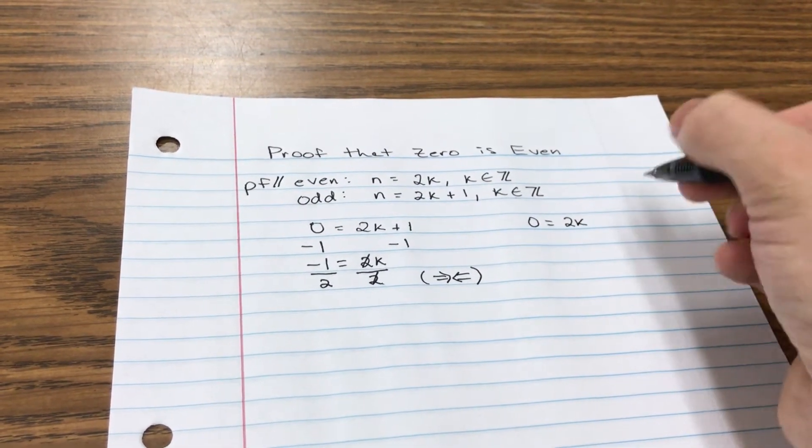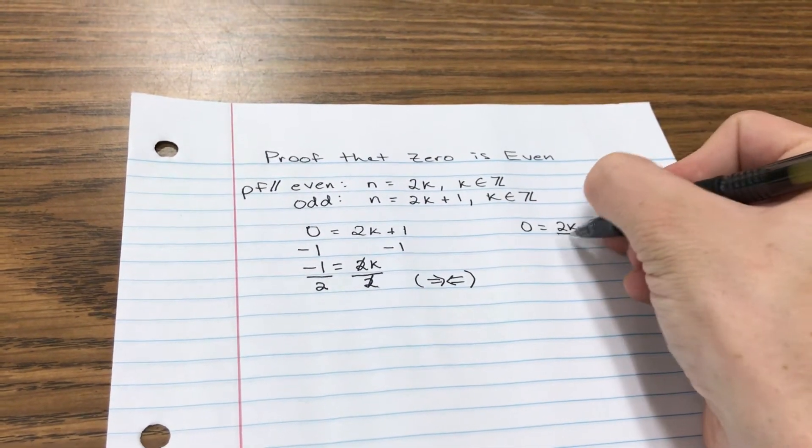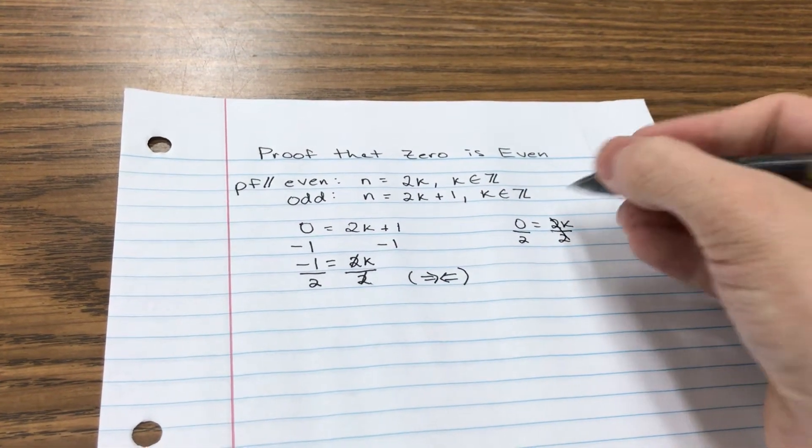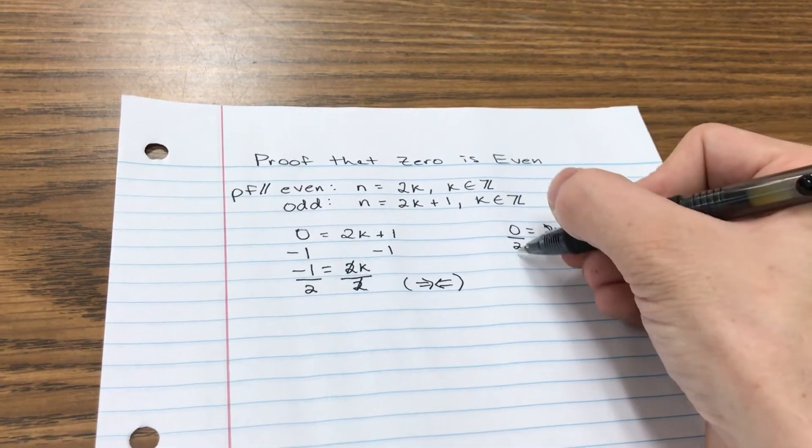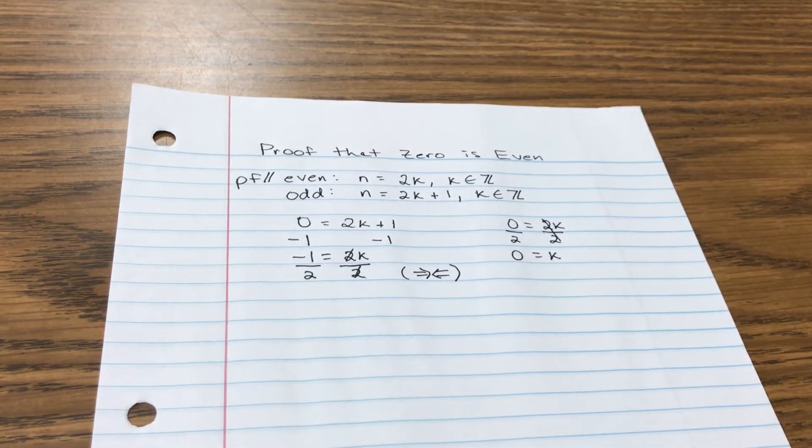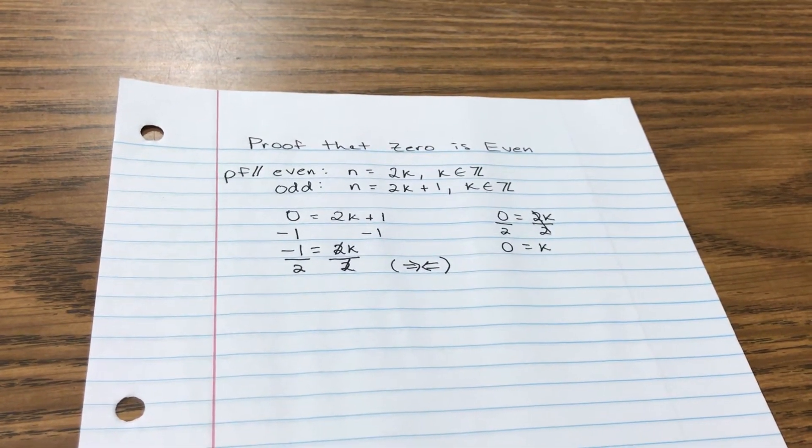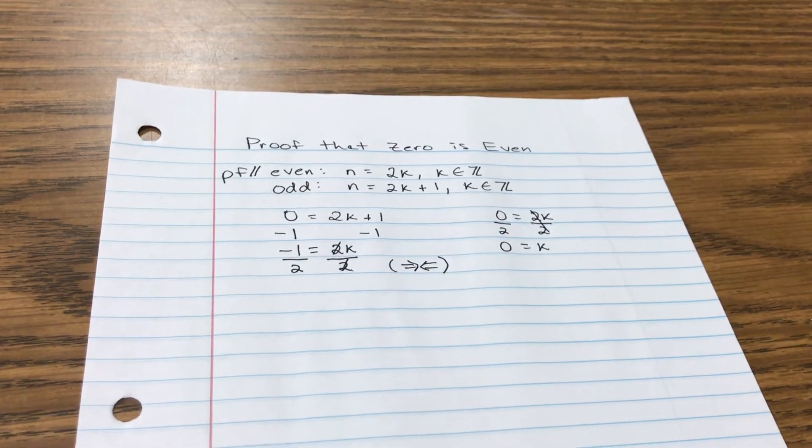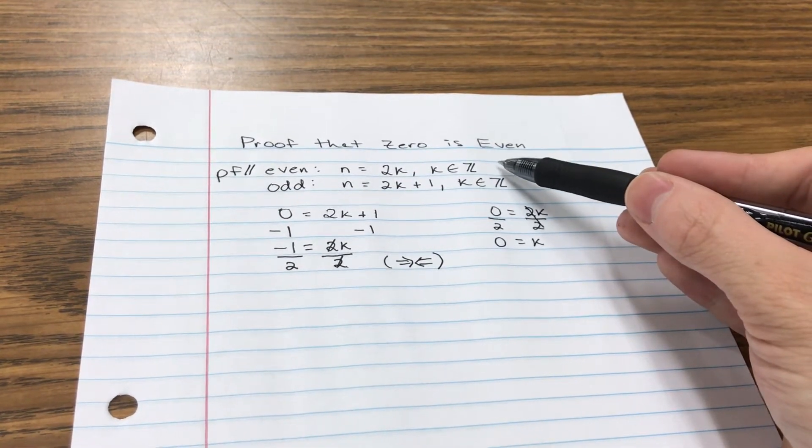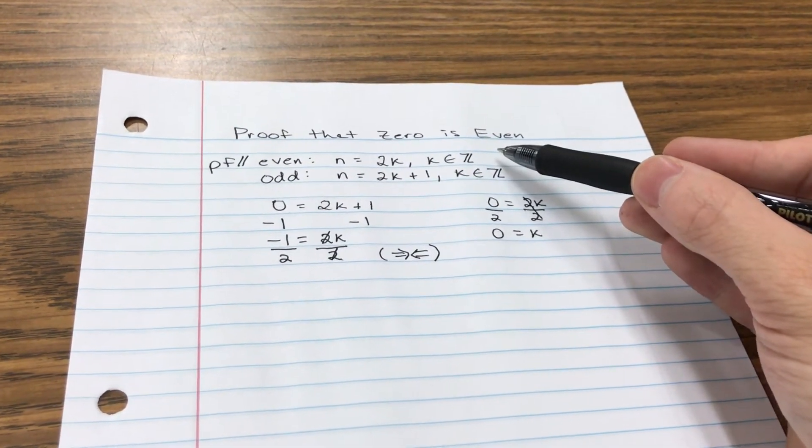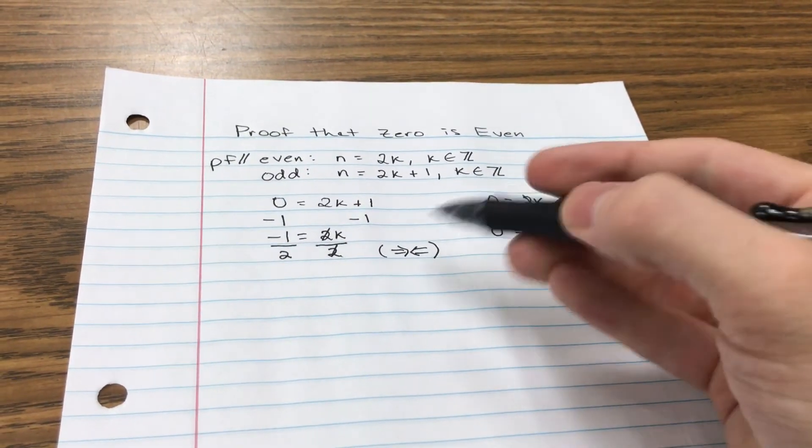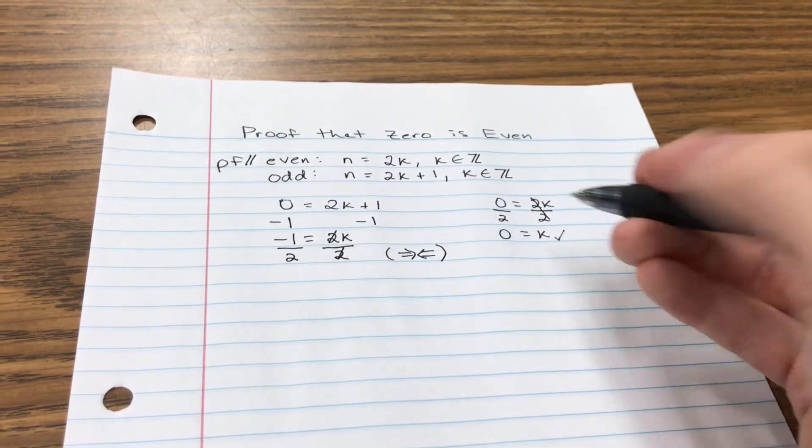And if we divide by 2, watch what happens: the twos cancel and I get 0 divided by 2, and of course we know that's 0. You can put that in your calculator and figure that out. And we find out that k is equal to 0. Well, that's good because 0 is an integer, and we said that for our condition for the even definition that k must be an integer. So this way works, this way does not; it leads you to a contradiction.